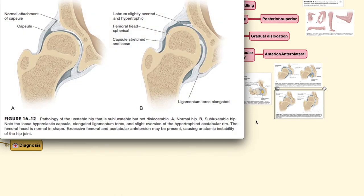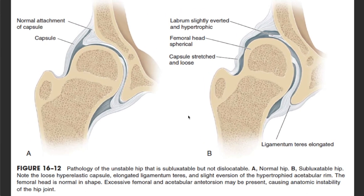In the subluxatable hip — where the hip can go a little bit out of its place but not enough to fully dislocate — a normal hip shows no redundant capsule, the ligamentum teres is not elongated, and the labrum is inverted. When the labrum is slightly everted and the capsule is slightly stretched, the hip can go out of the acetabulum but not enough to fully dislocate. This is called a subluxatable hip.